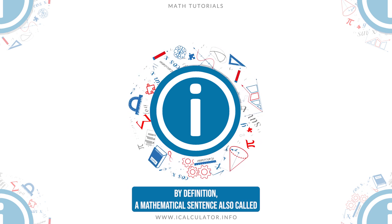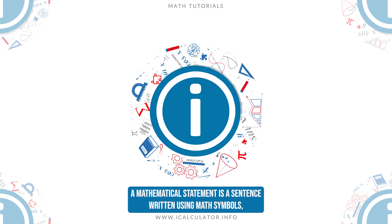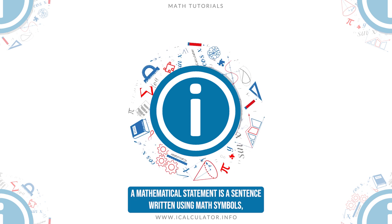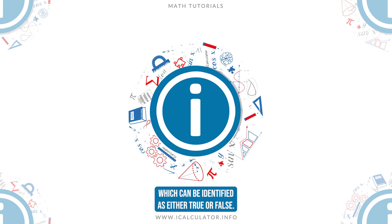By definition, a mathematical sentence, also called a mathematical statement, is a sentence written using math symbols which can be identified as either true or false.